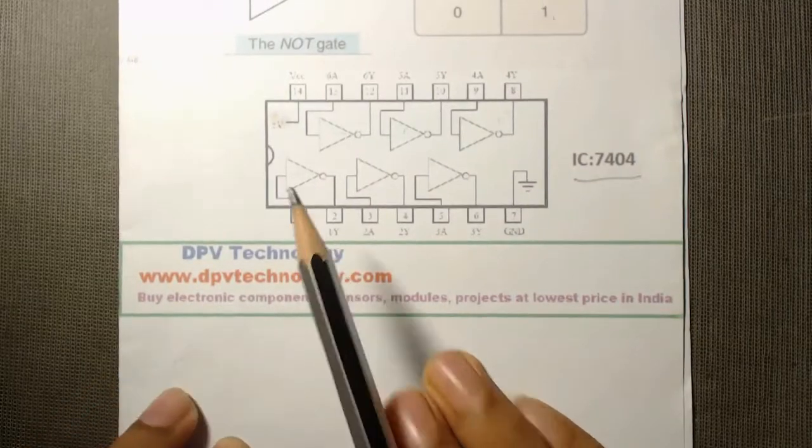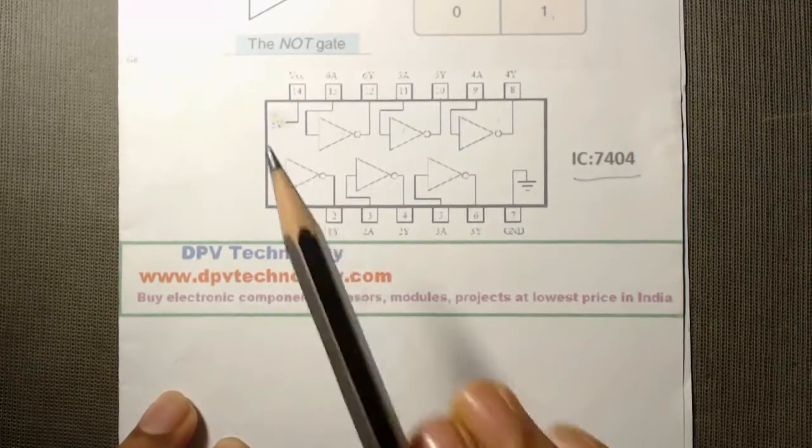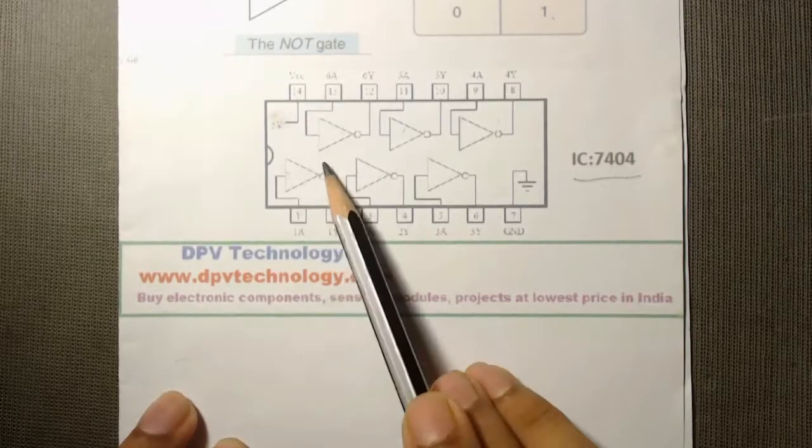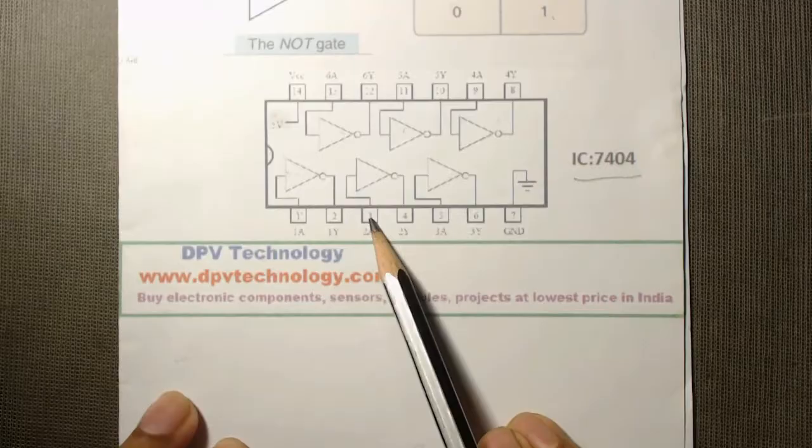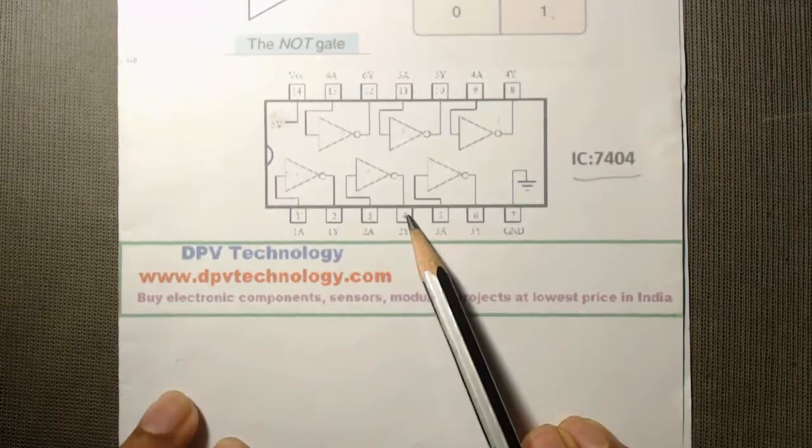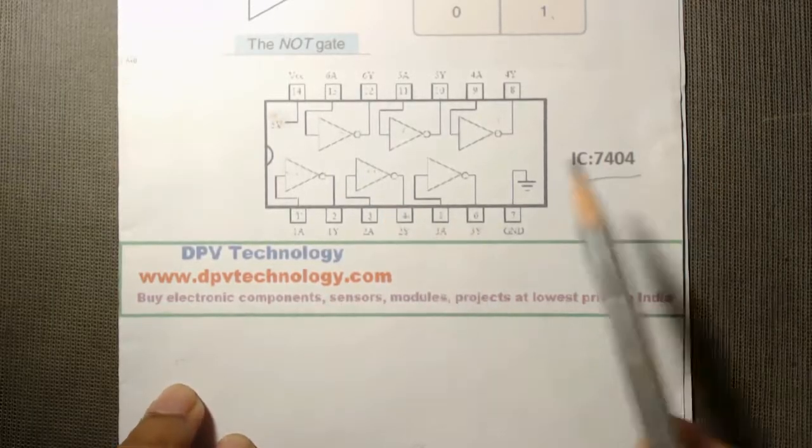Pin number 1 is the input of this first NOT gate and 2 is the output of this first NOT gate. Then 3 is the input of second NOT gate and 4 is the output of second NOT gate, and so on.